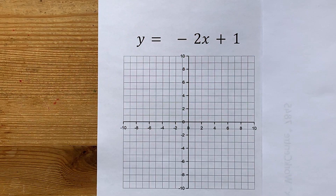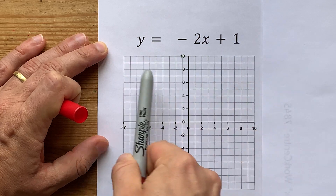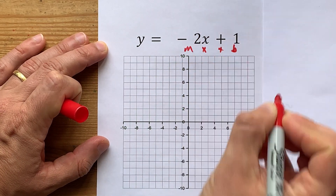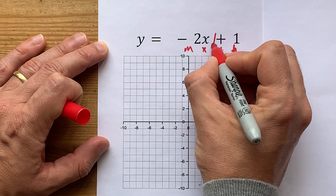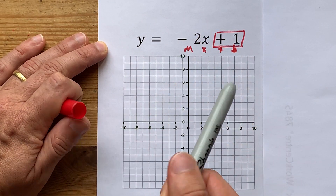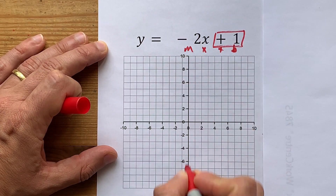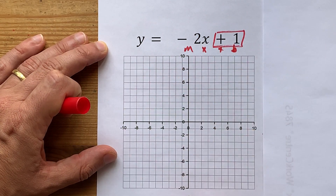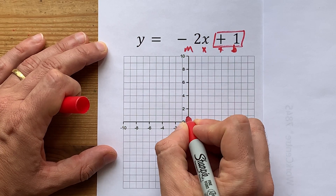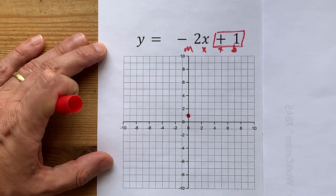Let's graph y equals negative 2x plus 1. This is a line in y equals mx plus b form, and that means we can read the b directly from the equation. That's the y-intercept, and it's positive 1. So along the y-axis — that's the up-down axis — find 1, which is here between 0 and 2, and put a dot there. That's like the starting point for our line.